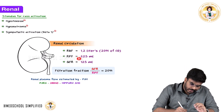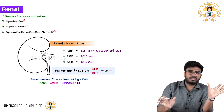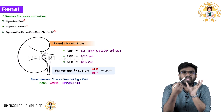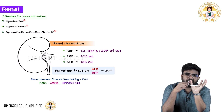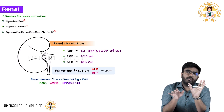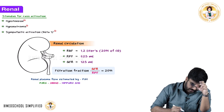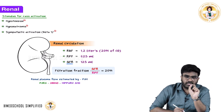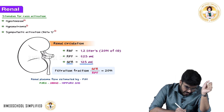Blood flow is 1.2 liters and renal plasma flow is 625 ml. Imagine this represents all the nephrons as one nephron. Out of 625 ml of plasma coming to the nephron, not all 625 ml is filtered — only 125 ml is filtered. This is called the filtration fraction.